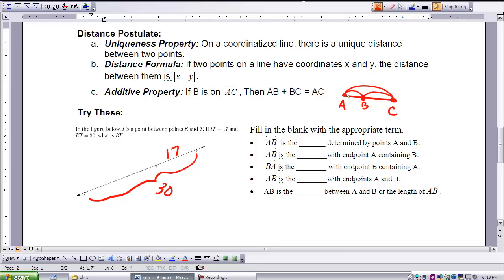And we can use algebra to solve that by substituting in values that I was given. If I move 17 over to the other side, KI is going to equal 30 minus 17, which is 13. So my distance from K to I is 13.